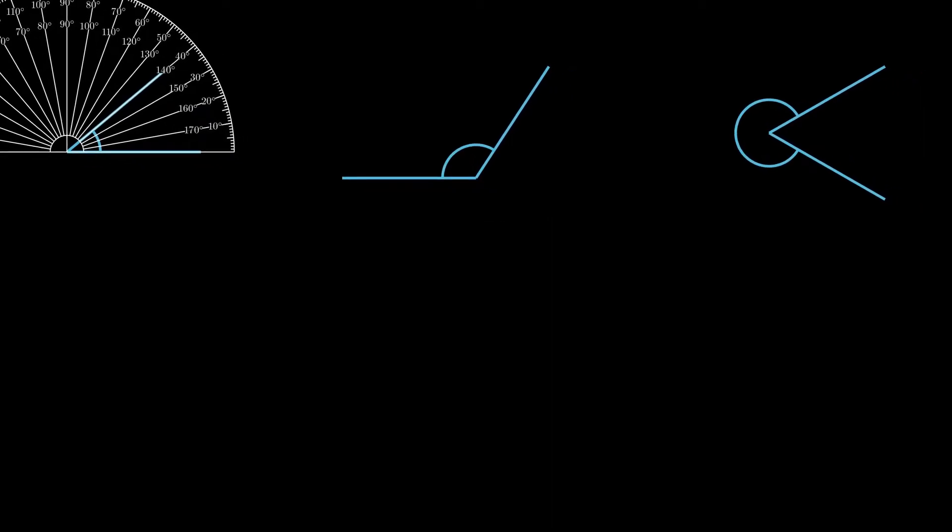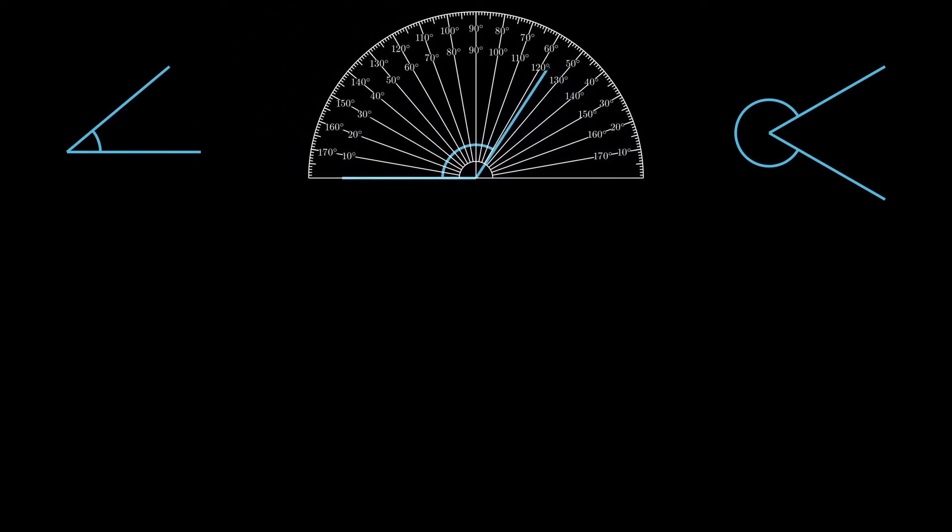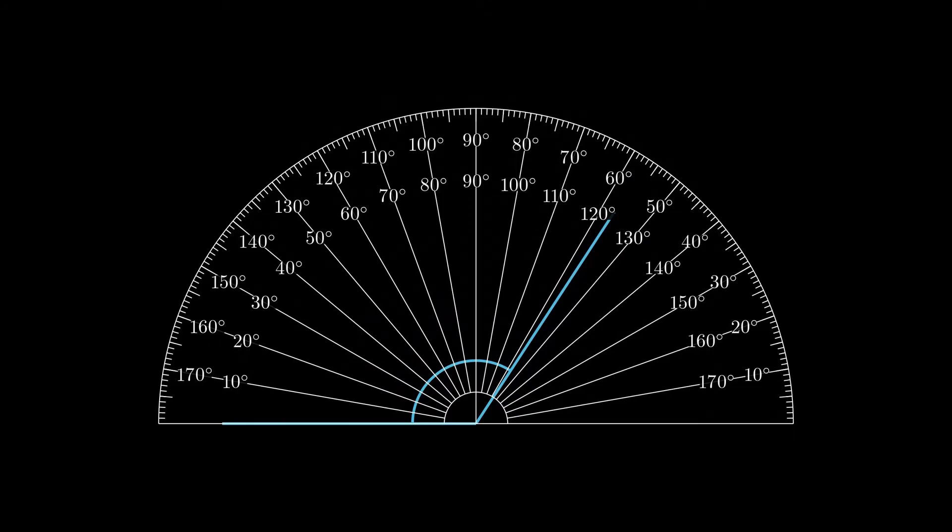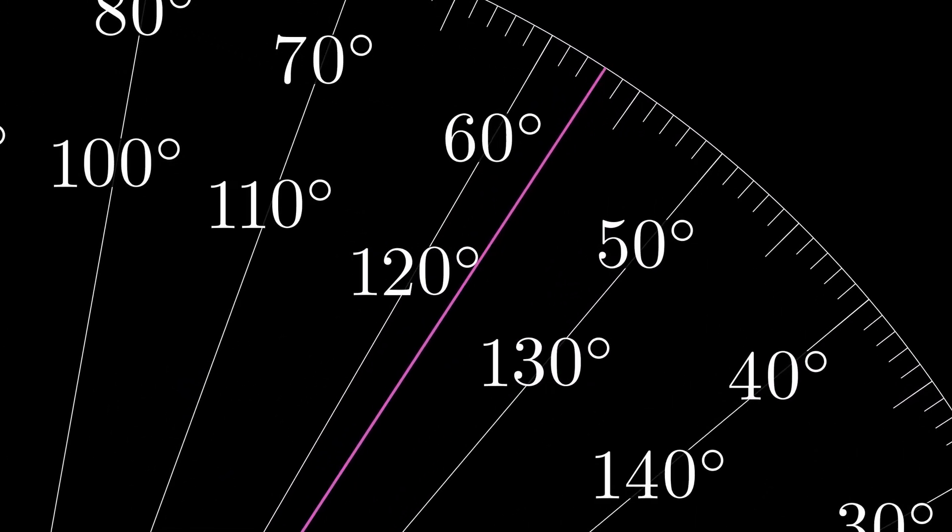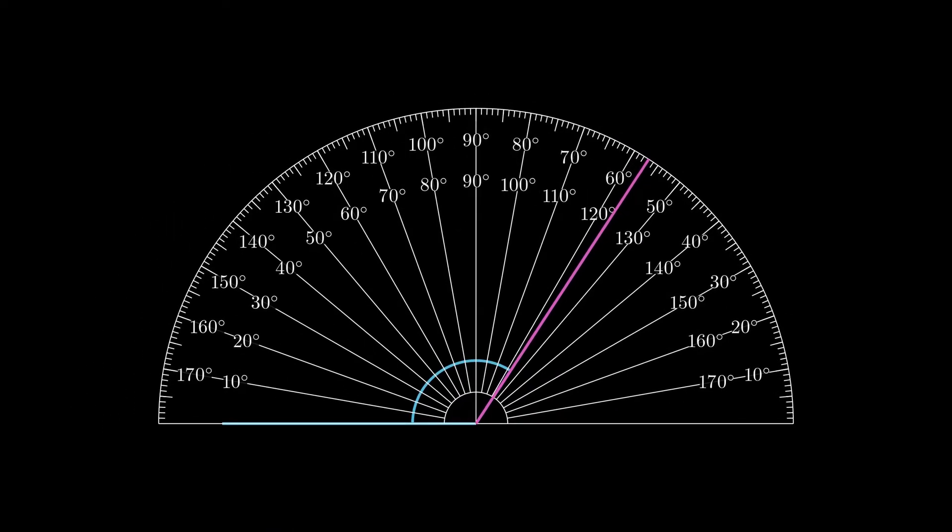Going across to the next angle here, we once again make sure the center aligns with the tip of the angle. Then we make sure the bottom is in line with one arm, and this time we'll be measuring from the left. We imagine spinning up to where the other arm is pointing, and we're somewhere between 120 and 130 degrees. So note we're measuring from the left again, so we're only looking at the bottom row of numbers. But if we look a bit closer, we'll find the angle is right at this point here, which is 123 degrees. So be careful with which row of numbers you're using—that's depending on which side you're measuring from.